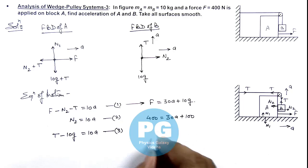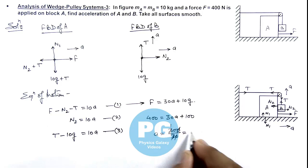So on simplifying the value of a I am getting this 400 minus 100, 300 divided by 30. So this is equal to here we get it as 10 meter per second square.